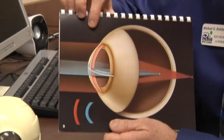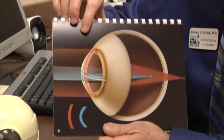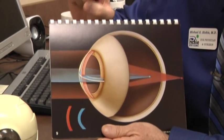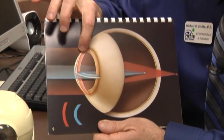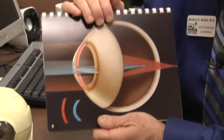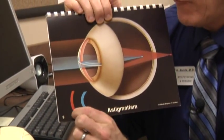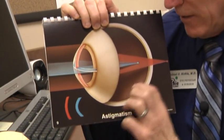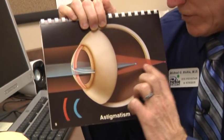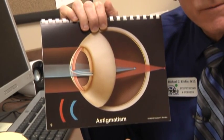Why is this significant? Because when light enters the eye, it is focused based on the curvature of the cornea. So if the cornea has a steep curve in one direction and a flatter curve in the other direction, light rays focus at different points based on those curves.